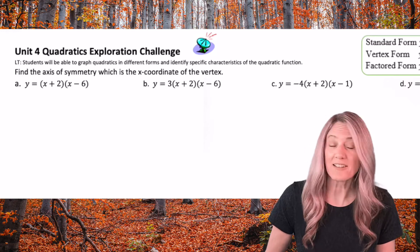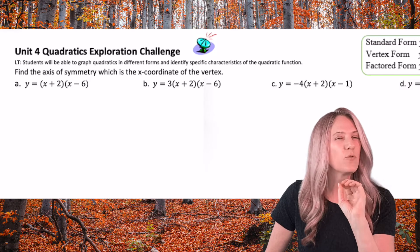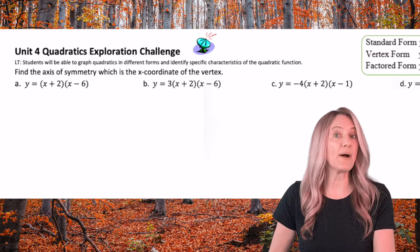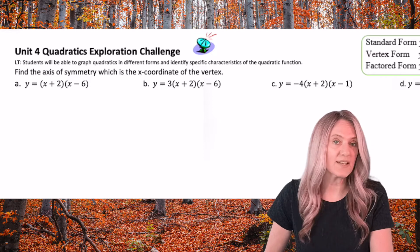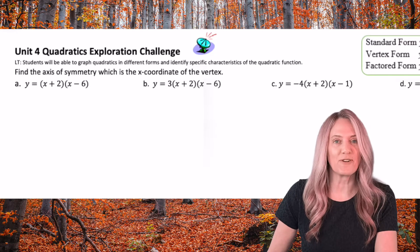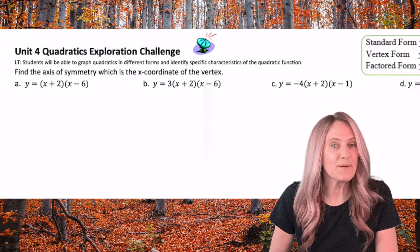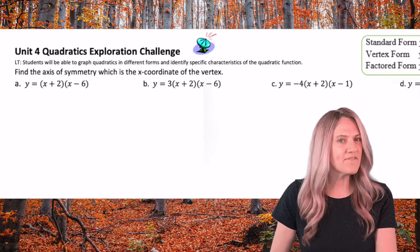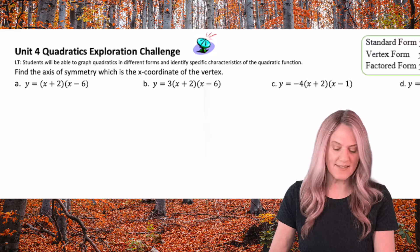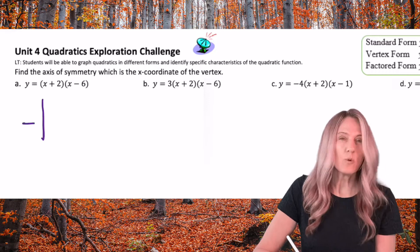Four quadratic exploration challenge. We just have one thing that we need to clear up — I alluded to it last lesson. Take a look at the first example. It says find the axis of symmetry and we're in factored form. That's pretty easy, so let's take a look really quick graphically.